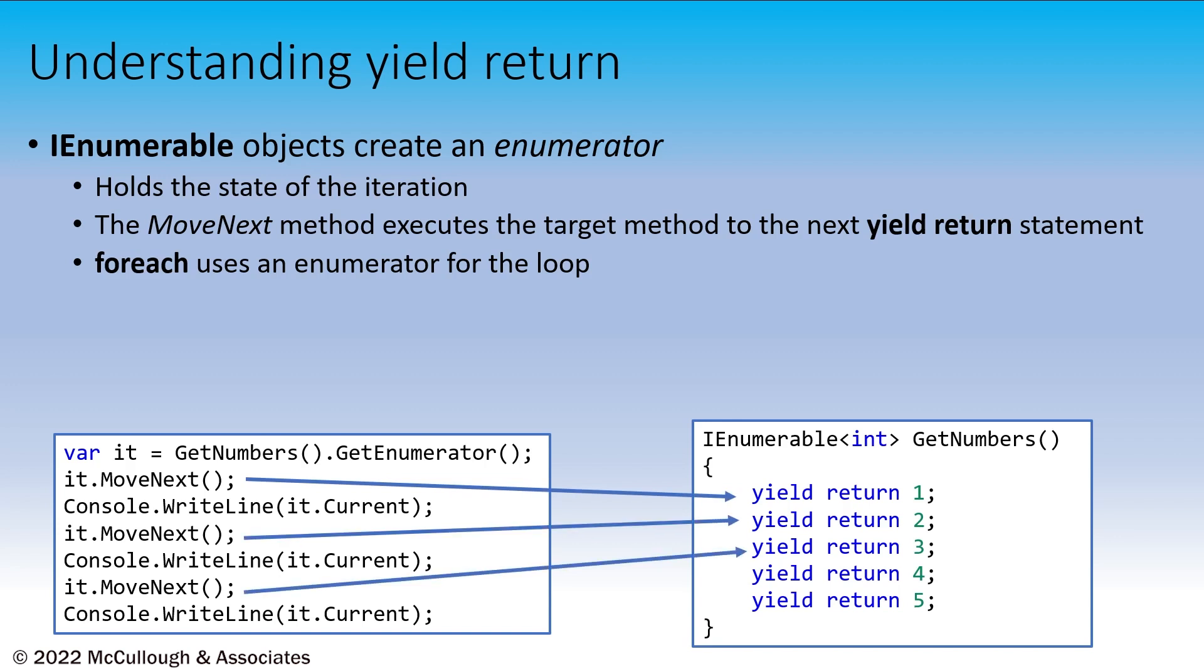The IEnumerable interface has only one real method called GetEnumerator. An enumerator, which is also known as an iterator, so we'll use those terms kind of interchangeably, has only one method called MoveNext and a property called Current. These are used to advance the iterator and examine the current element that the iterator is at the moment looking at or referencing. This object is really a state machine that holds the location of the last executed yield return in the target method.